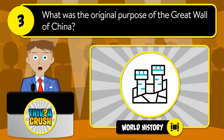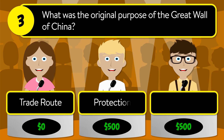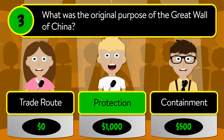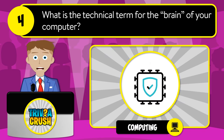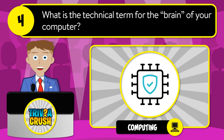Question number three: what was the original purpose of the Great Wall of China? Was it trade, route protection, or containment? The correct answer is protection.